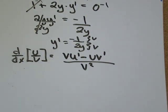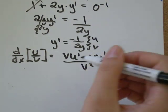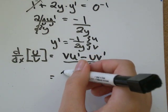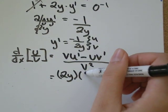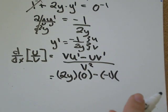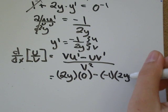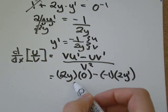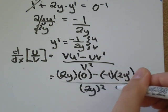So in this case, u is -1, and v is 2y. So we'll go 2y. The derivative of -1 would be 0, minus -1. The derivative of 2y, implicitly, would be 2 times y' over (2y)².